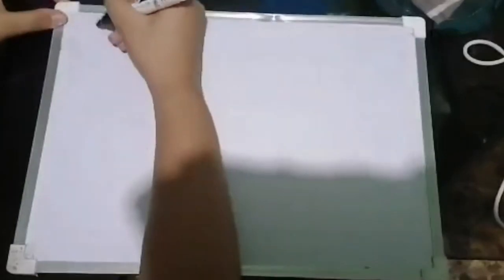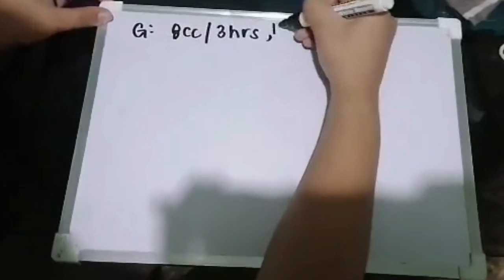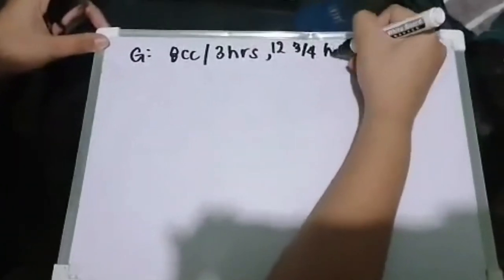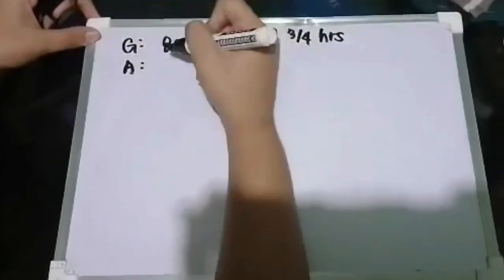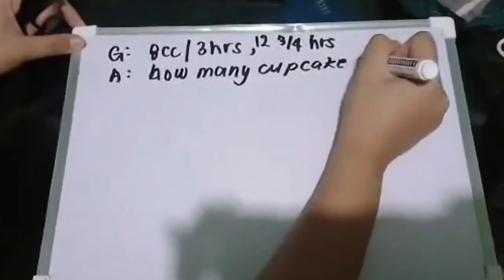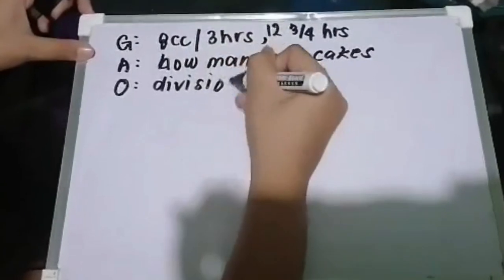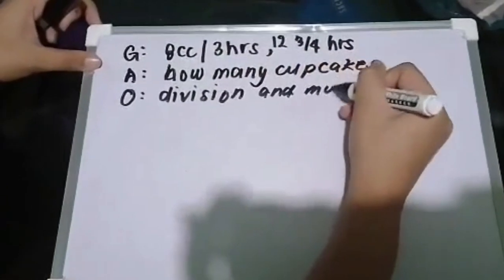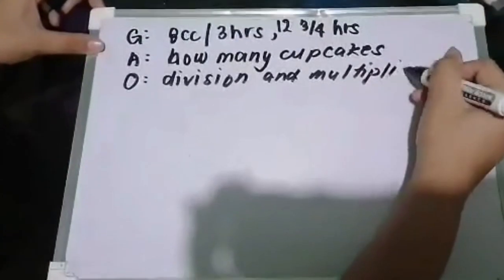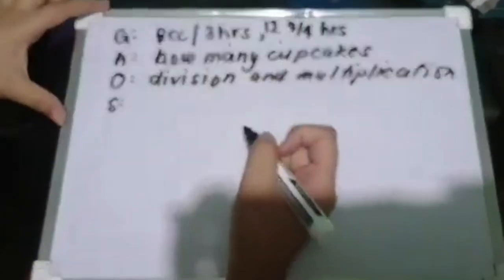First, let us identify the given information. The given in our problem is 8 cupcakes per 3 hours, and 12 and 3/4 hours. The question asks: how many cupcakes? The operations we need are division and multiplication. Now, let's proceed to solving. We have to divide 3 hours into 12 and 3/4 hours.